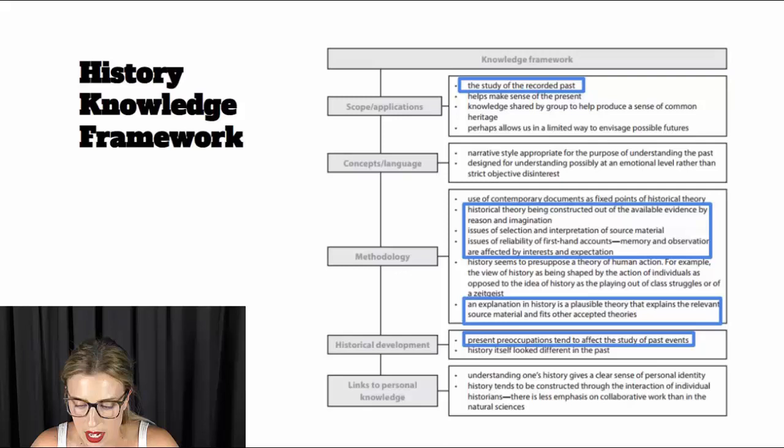Secondly, I wanted to point out some things about the methodology of history. You can see that history is not what happened in the past. It's historical theory that is constructed or made by humans out of the available evidence by reason and imagination, those ways of knowing being brought in there. You can see that there are some problems with that because if it's constructed by humans, it relies on issues of selection and interpretation of source material. So historians have to go and select which sources they're going to use, and they also have to place importance or make judgments about their importance, and then they have to interpret what those sources are actually telling them about that historical event.